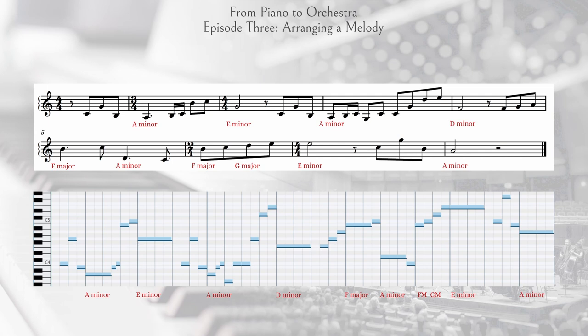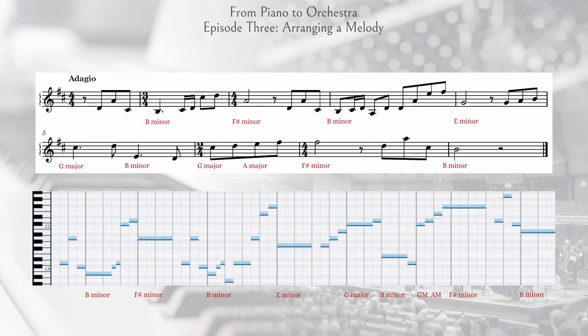I'll first make a version with a slow tempo and a darker timbre overall. There's no reason I have to stick to this transposition — I often like to transpose piano music a few semitones up before orchestrating, as lower-voiced chords in the piano have a tendency to sound muddier when orchestrated at that same transposition. I'll bump everything up a whole step, so now I'm in B minor.